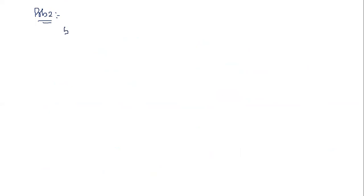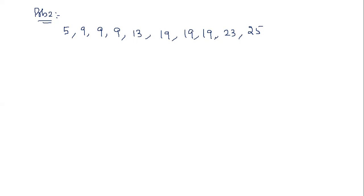Now let's look at problem two. The data set is: 5, 9, 9, 9, 9, 9, 13, 19, 19, 19, 23, and 25. We count 10 samples, which is an even number. For an even number of samples, we take the two middle values to find Q2. Q2 equals (13 plus 19) divided by 2, which equals 16.